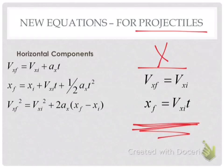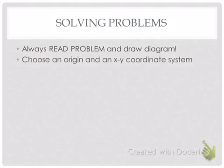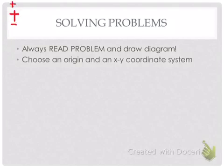These are our X equations for projectiles. We only need the shortened version, which I'll explain relative to our original kinematics equations. Make sure to read the entire problem — don't assume you know what they're going to ask. It's really important that you choose the origin and XY coordinate system. Every time we draw a diagram for a projectile, we include the origin. If your coordinate system is different — like choosing down as positive and up as negative — include that, otherwise we assume up is positive, down is negative, right is positive, left is negative.